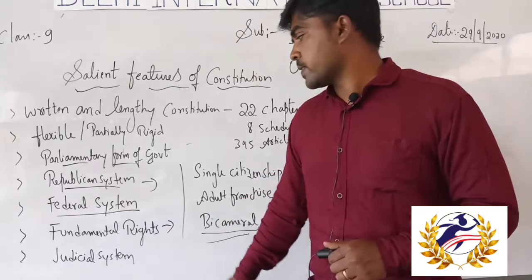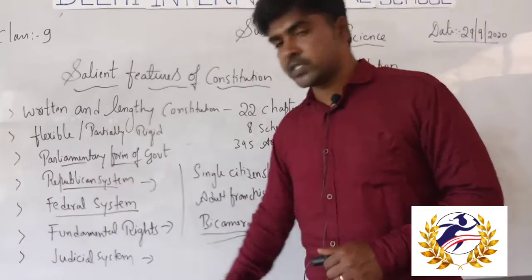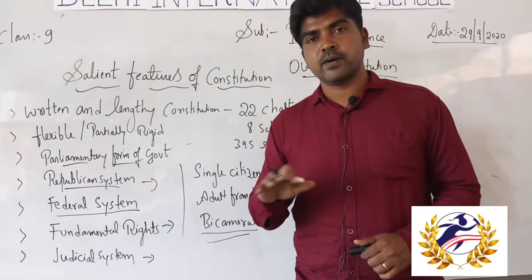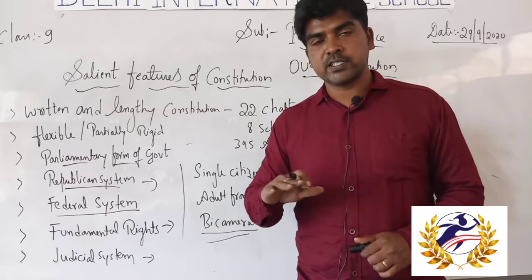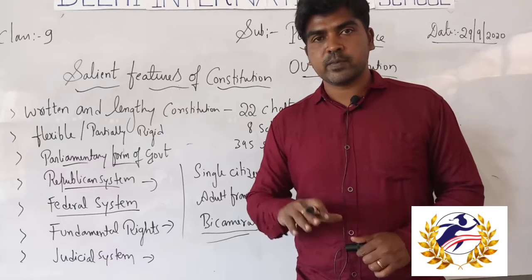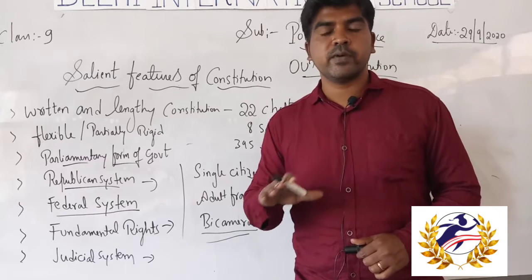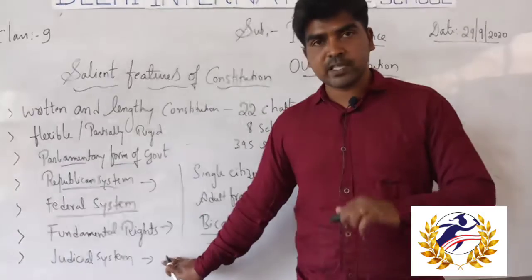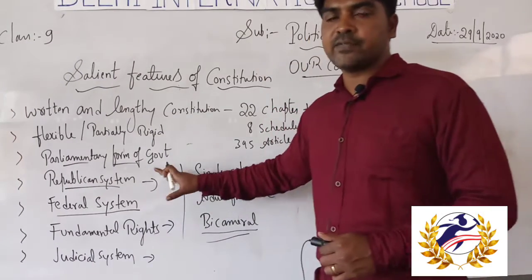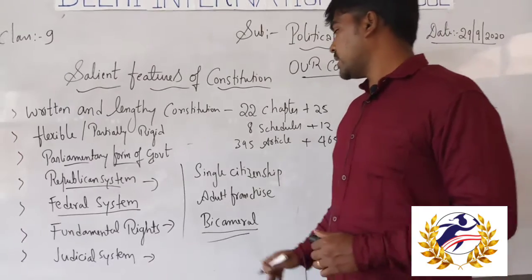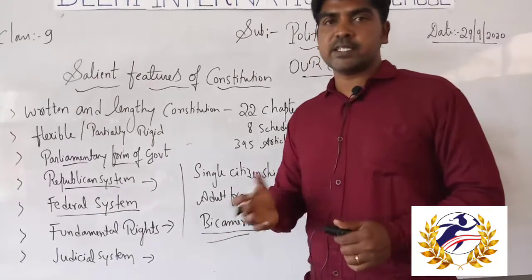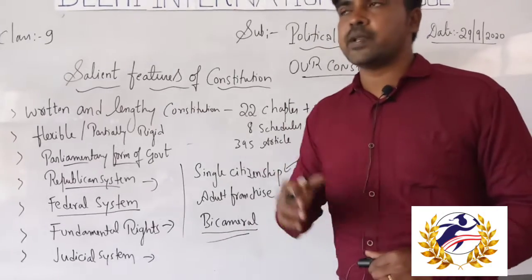Next is the judicial system. We have a court system consisting of the Supreme Court, High Courts at the state level, and subordinate courts. There are courts at the district level, taluk level, and even at the Gram Panchayat level. These are among the salient features of the Indian Constitution.